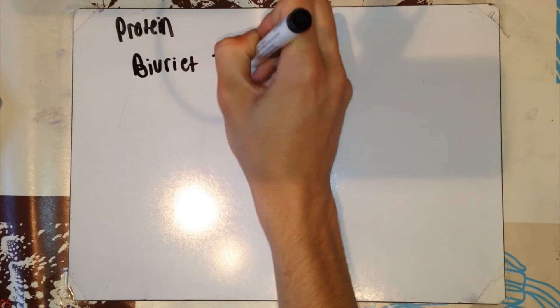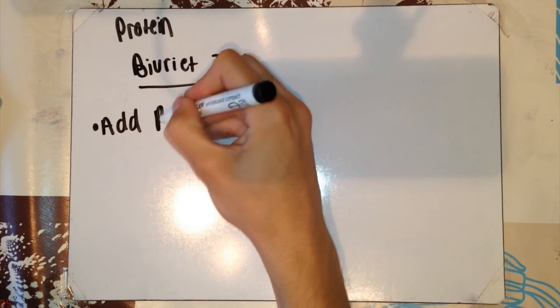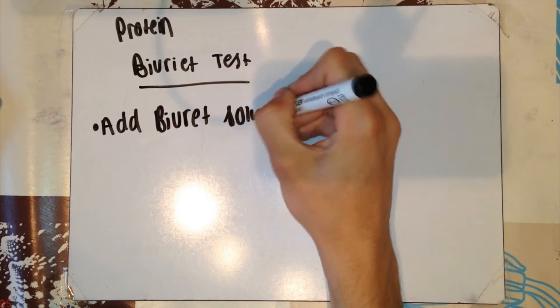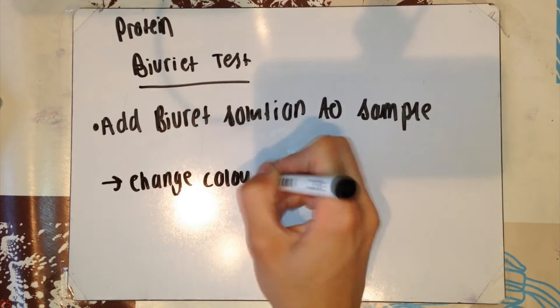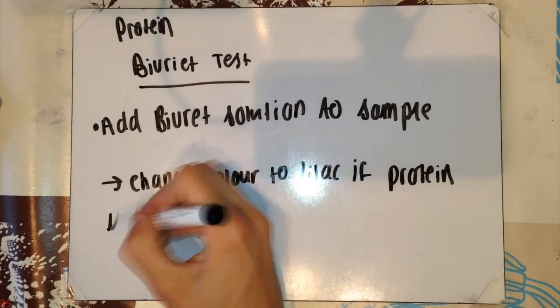Now, to test for protein. This test is once again a very simple test. It's the Buret test. So, you add Buret solution to the sample. If a protein is present, the solution will turn into a lilac color.